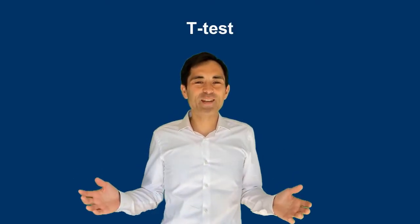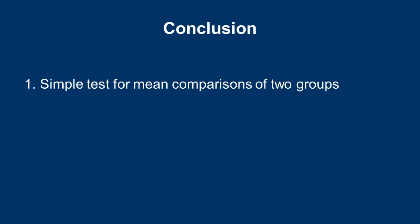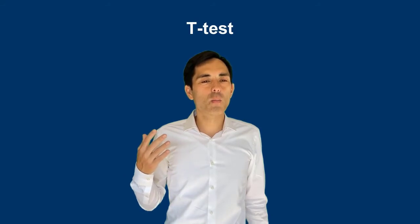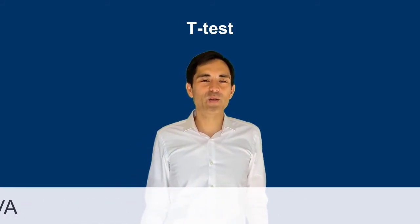We've now reached the end of this video. To sum it up, a t-test is a simple test for mean comparison of two groups. It cannot handle more than two groups and cannot consider covariates. If you're interested in more complex models, you may consider ANOVA, ANCOVA, or MANCOVA — I have videos for those group comparisons as well. Thank you. Bye-bye.